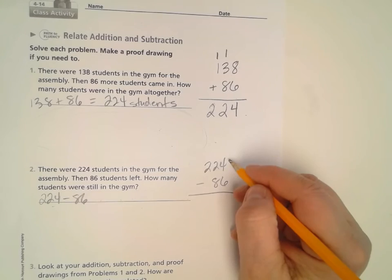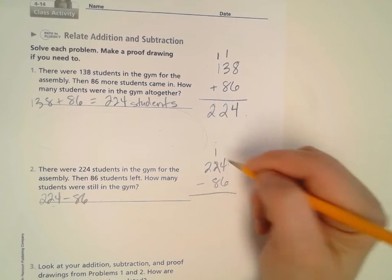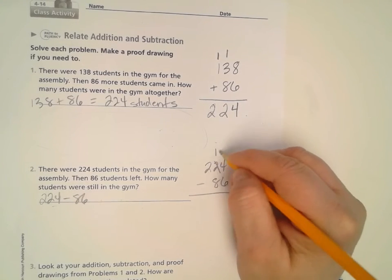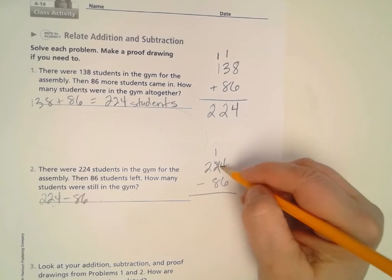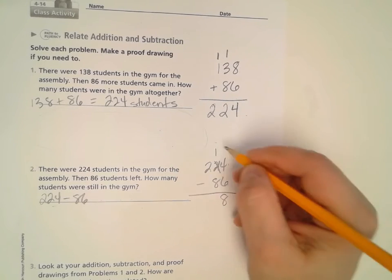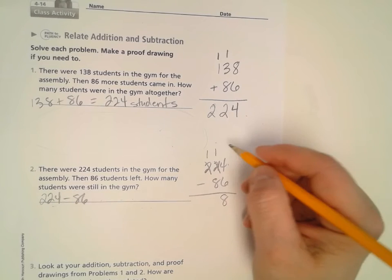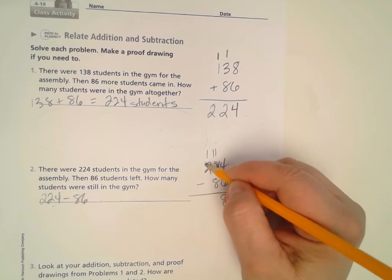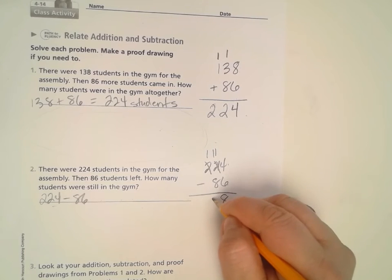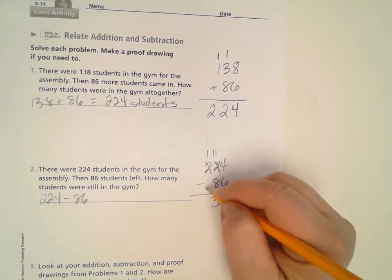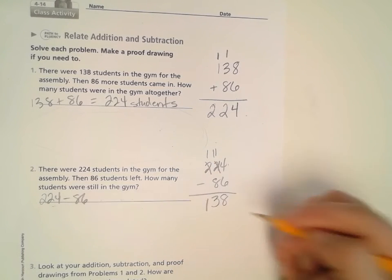So 4 minus 6, we can't do that. So we need to regroup one of those 10s, or ungroup one of those 10s, make it 10 ones. 14 minus 6 equals 8. Then here we have our 100. So we may take that 100, take it into 10 10s. 11 10s minus 8 10s gives me 3 10s. And then 1 minus nothing is 1. Hey, look at that.